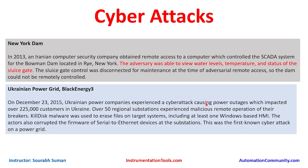On December 23, 2015, Ukrainian power companies experienced a cyber attack — also known as the Black Energy 3 attack — causing power outages that impacted over 225,000 customers. This was one of the first known attacks on power companies. Over 50 regional substations experienced malicious remote operation of their breakers. Kill Disk malware was used to erase files on target systems including at least one Windows-based HMI. The actors also corrupted the firmware of serial-to-Ethernet devices at substations. This was the first known cyber attack on a power grid, with costs reaching into the millions when production losses and system restoration are considered.